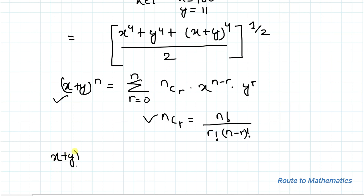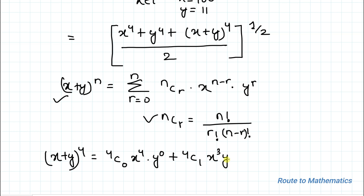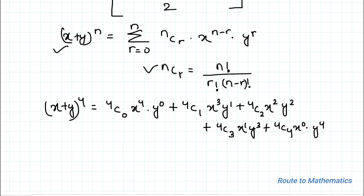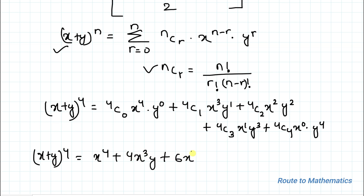(x + y)^4 = 4C0 · x^4 · y^0 + 4C1 · x^3 · y^1 + 4C2 · x^2 · y^2 + 4C3 · x^1 · y^3 + 4C4 · x^0 · y^4. Evaluating the binomial coefficients, this gives: x^4 + 4x³y + 6x²y² + 4xy³ + y^4.